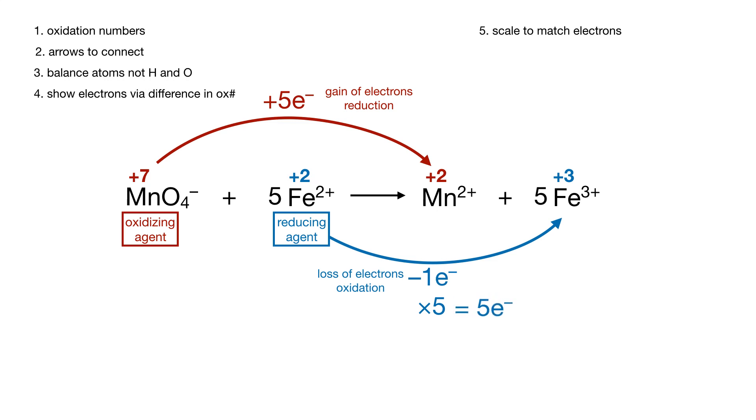And now I've got a check that 5 electrons for the reduction, 5 electrons for the oxidation. This is a match, which means everything's set up perfect.